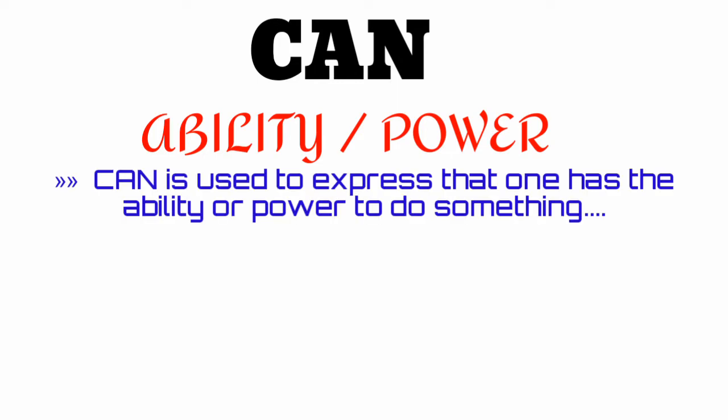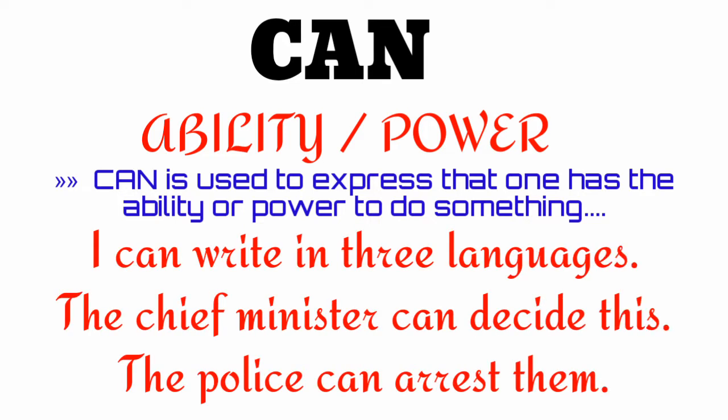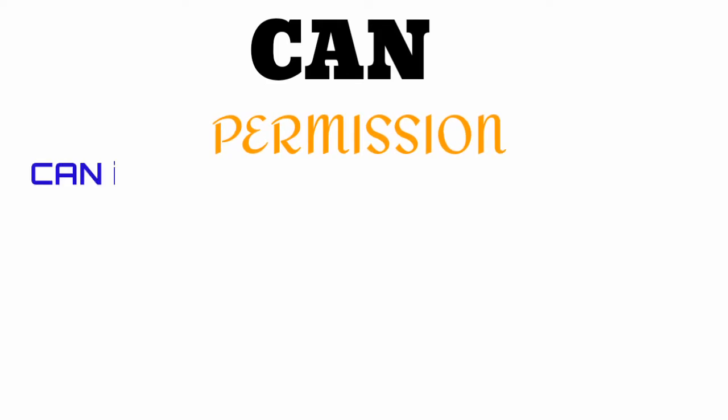Number one: can denotes ability or power. Can is used to express that one has the ability or power to do something. For example: 'I can write in three languages.' 'The chief minister can decide this.' 'The police can arrest them.'